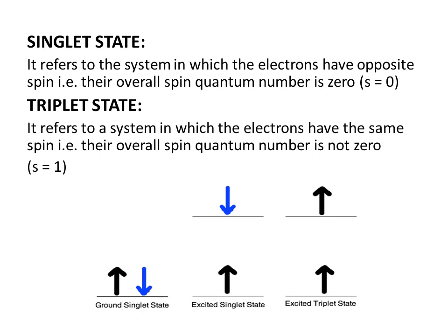Now, what is the triplet state? It refers to a system in which the electrons have the same spin. In this case the spin quantum number is not zero but rather one. In the figure, two electrons — one in the ground state and one in the excited state — have the same spin, so we refer to this as the excited triplet state.